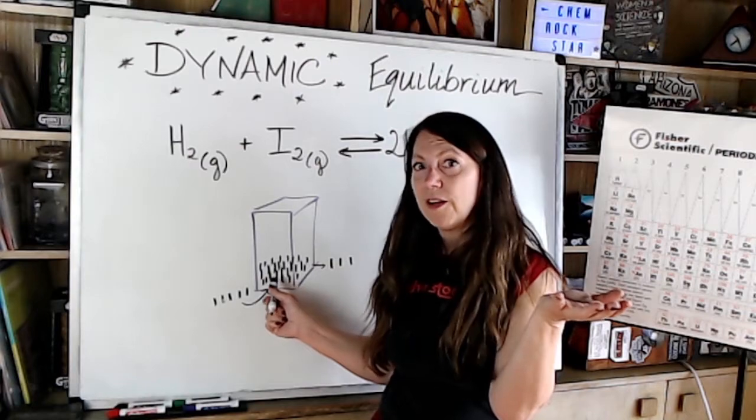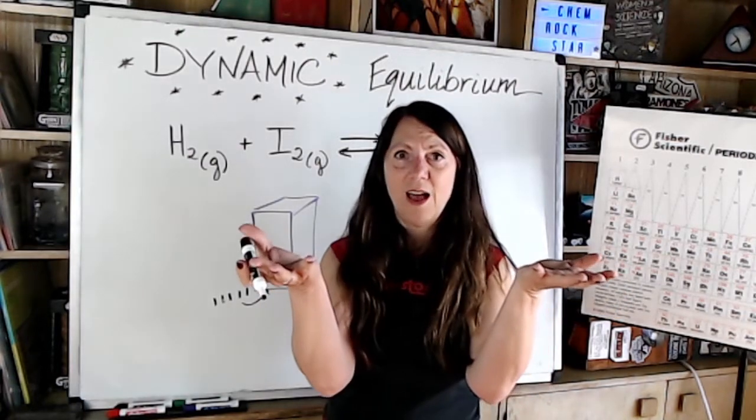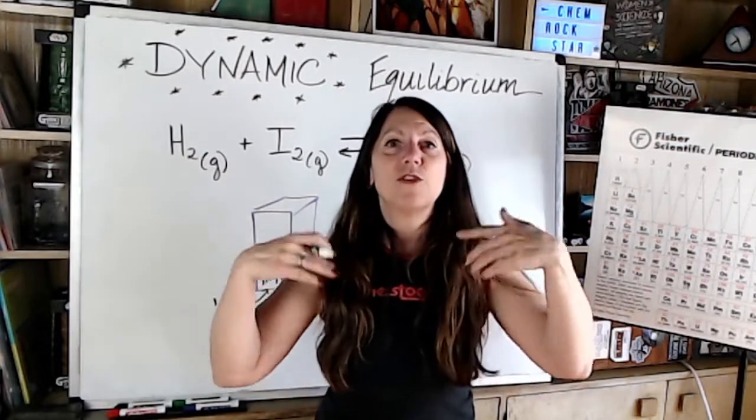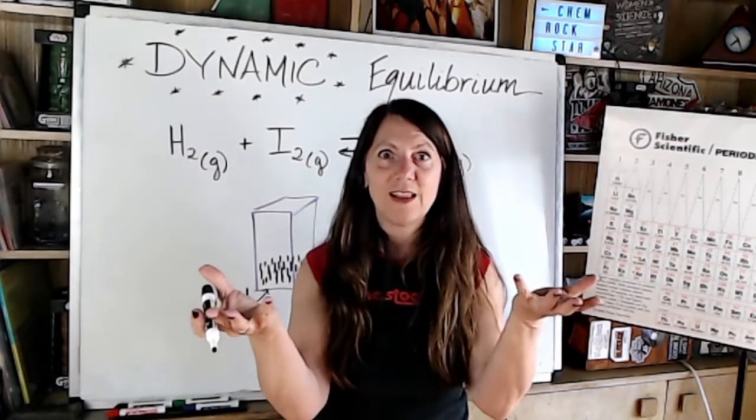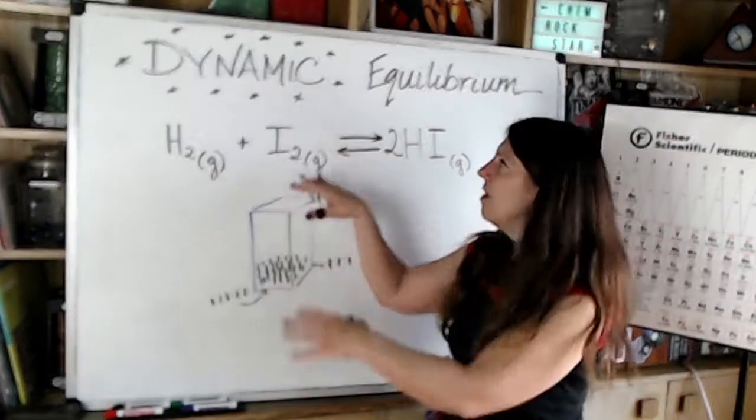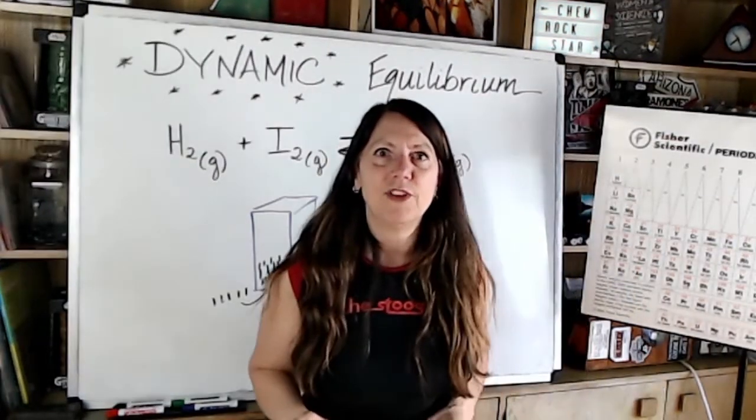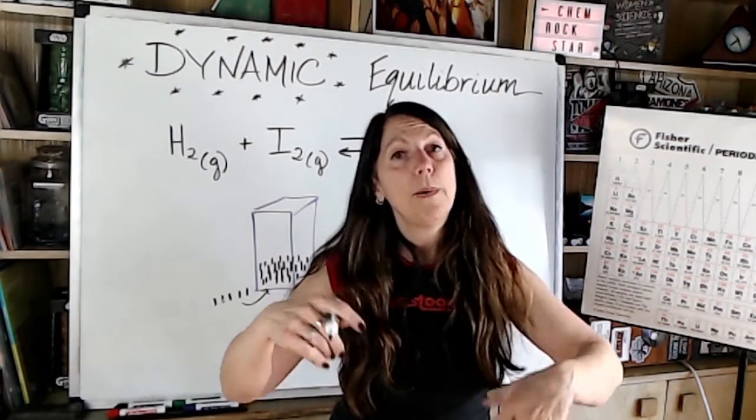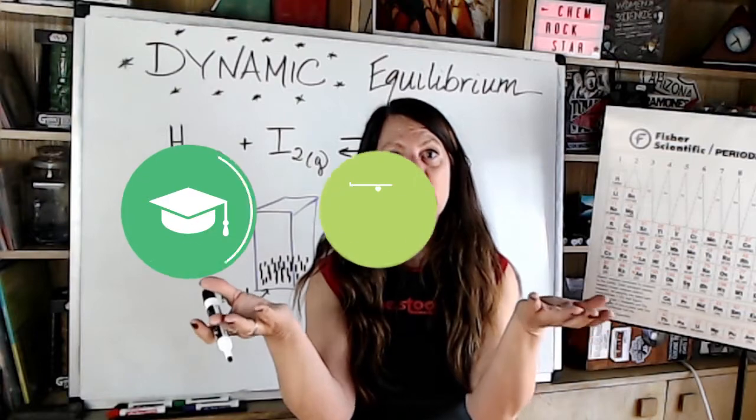Just like the number of people in the dance club is not changing, but there's still motion. It's not like everything's stopped. There's still motion, there's still different atoms doing different things. All right. So that is our concept of dynamic equilibrium: lots of motion, but steady concentrations.